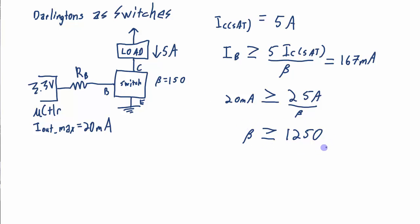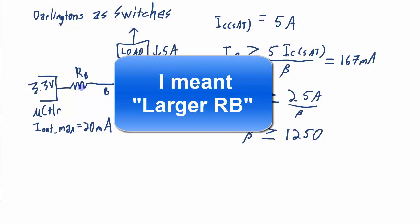And we can get this size of beta with a Darlington transistor. And if I have my beta even bigger, I found some Darlington transistors with a beta of around 7000. So that means I could use a larger IB than I would if I wanted to drive out 20 milliamps.